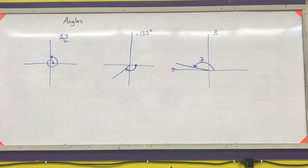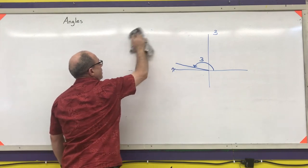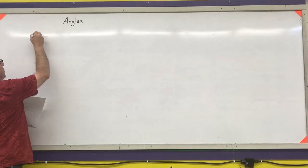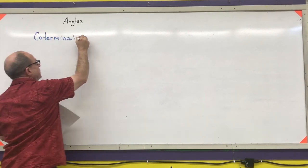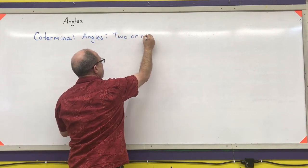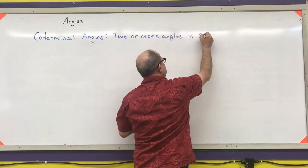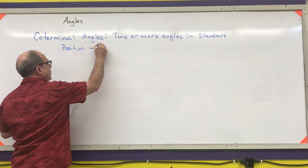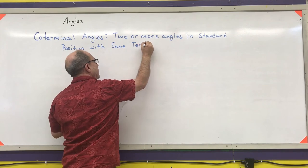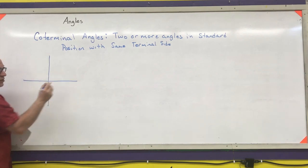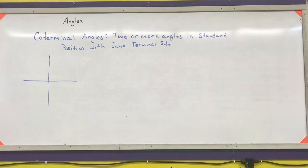The last thing we need to discuss is coterminal angles. Coterminal angles are two or more angles that have the same terminal side when they're in standard position. So I'm going to draw an angle and several coterminal angles to it.